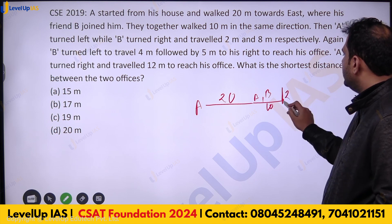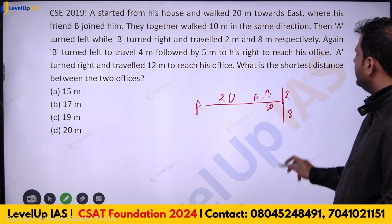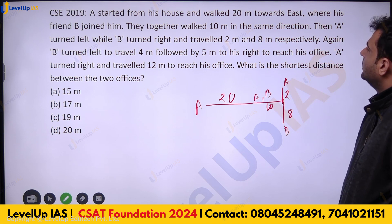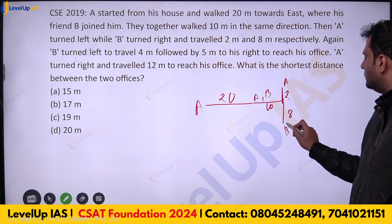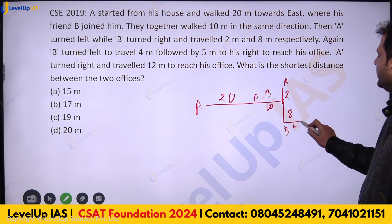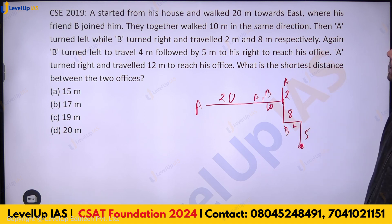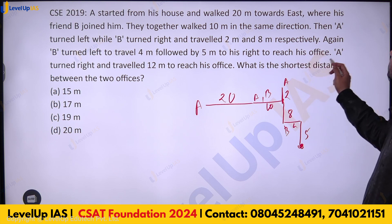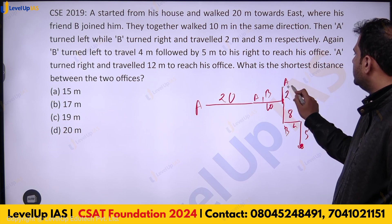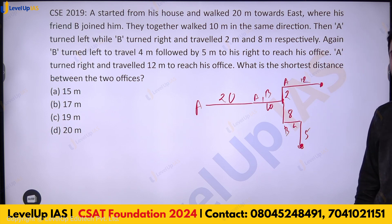Again, B turned left to travel 4 meters, followed by 5 meters to his right to reach his office. A turned right and travelled 12 meters to reach his office. The question is: what is the shortest distance between the two offices?